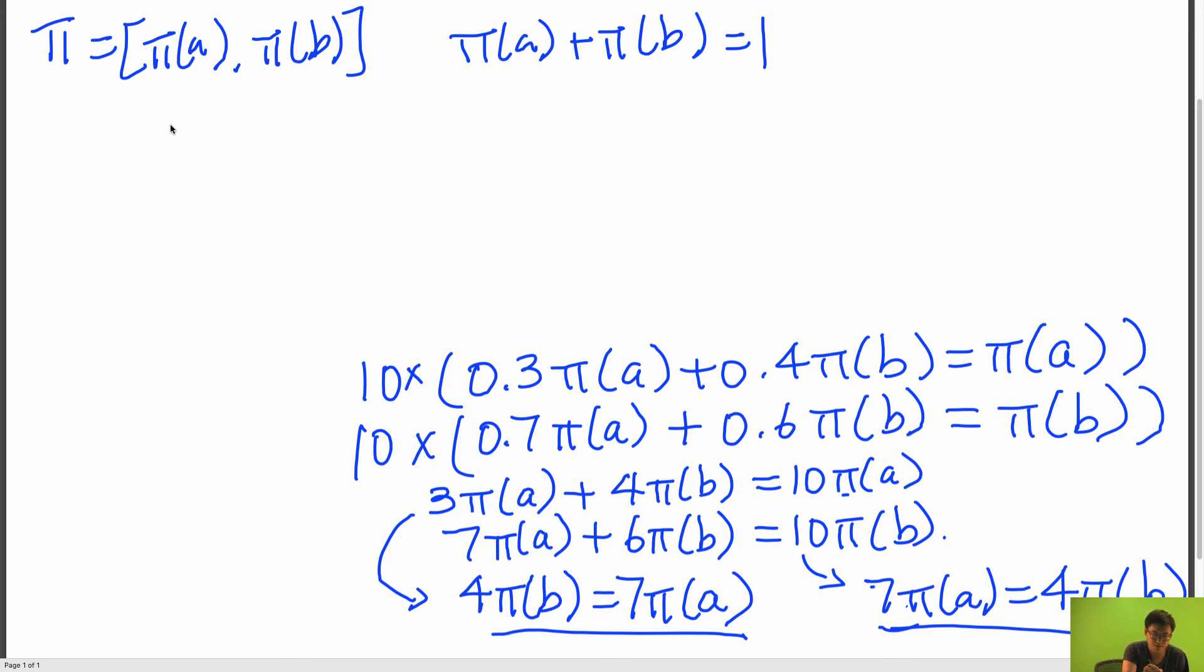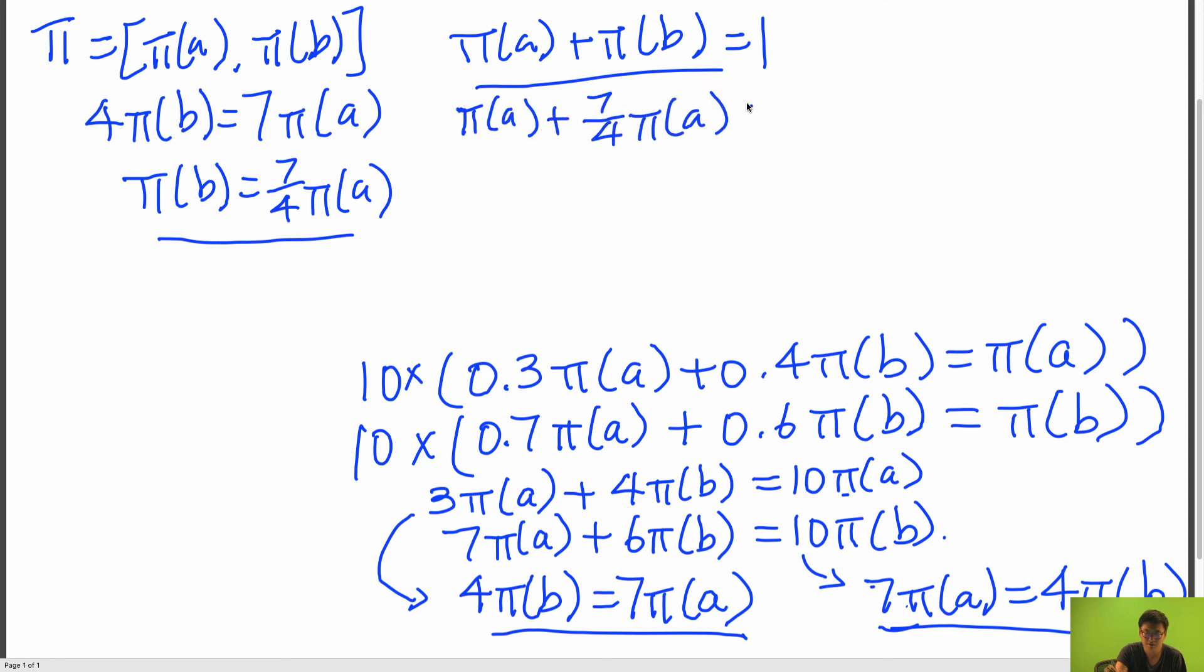So I previously had 4 pi B is equal to 7 pi A. So pi B is equal to 7 over 4 pi A. And I'm going to plug this into this equation to get pi of A plus 7 over 4 pi of A is equal to 1.